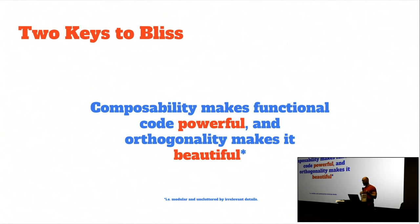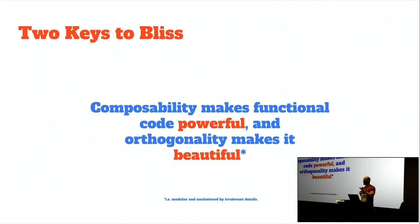Beauty here means modularity — uncluttered by irrelevant details. When I say this is a beautiful API, I mean it's very modular and problems are concerned with what they should be concerned with, not distracted by things that could have been ripped out. So both powerful through composability and beautiful through orthogonality.